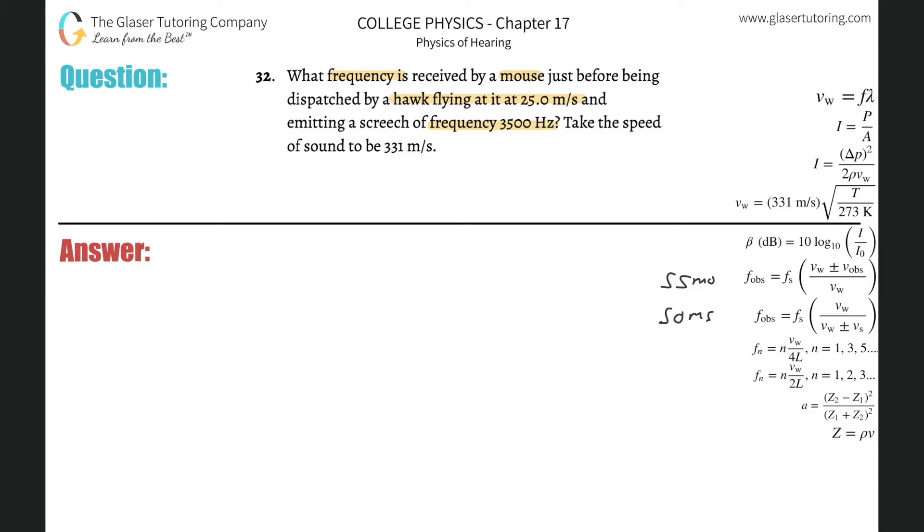Now we have two signs in there. So the frequency of the observer is going to be equal to the frequency of the source multiplied by the velocity of the sound divided by the velocity of the sound plus or minus the velocity of the source.